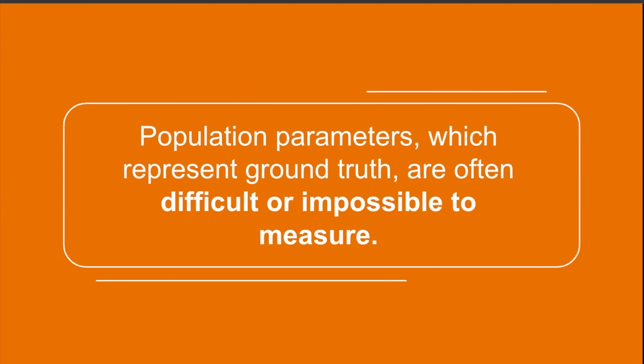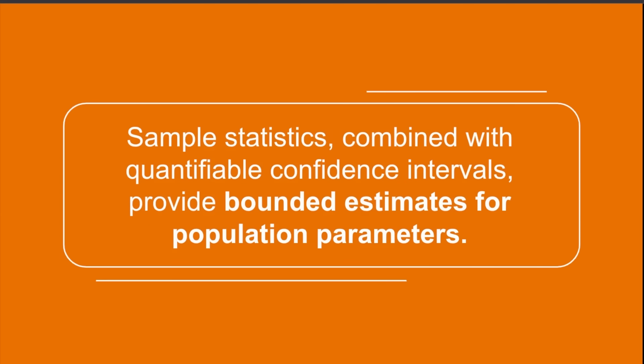This is where statistics becomes important. Sample statistics, combined with quantifiable and specific confidence intervals, provide bounded estimates for population parameters. The sample statistic is never guaranteed to be identical to the population parameter, but confidence intervals allow statisticians to say how likely the population parameter is to be within a certain range around the sample statistic. Let's start thinking about these confidence intervals and what they mean.